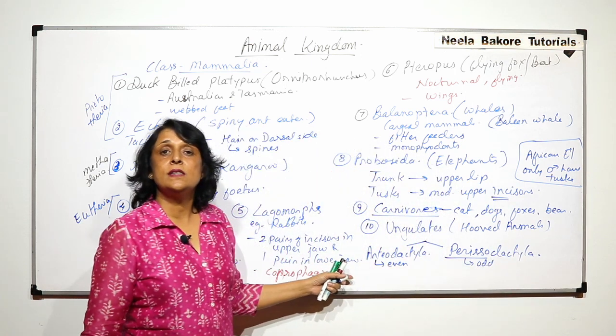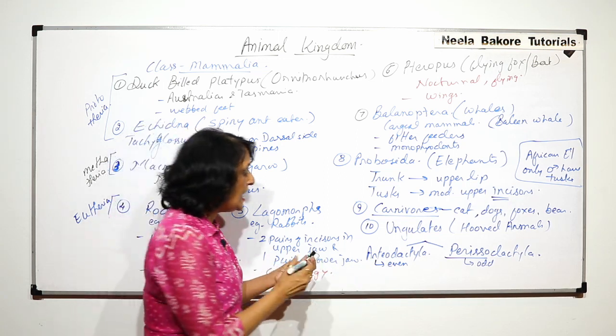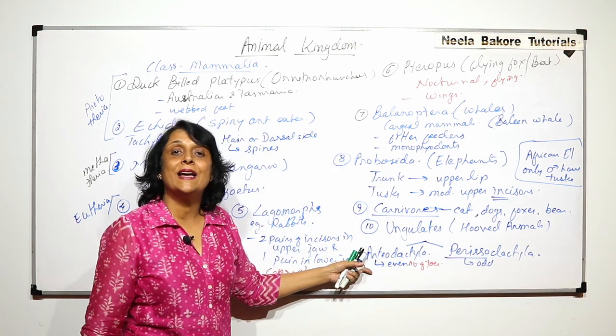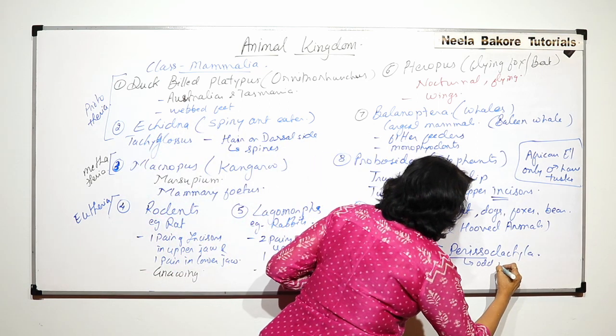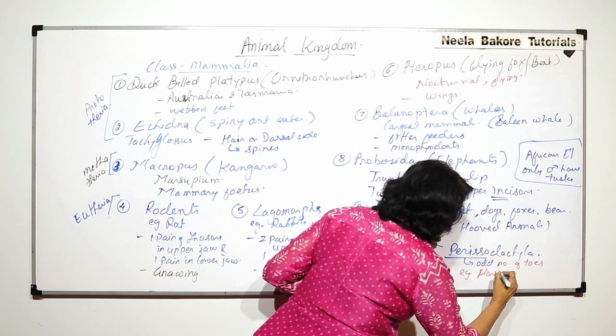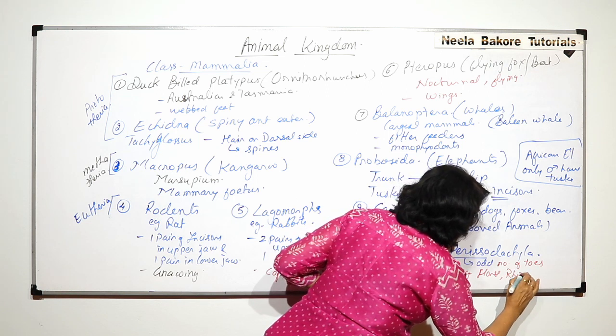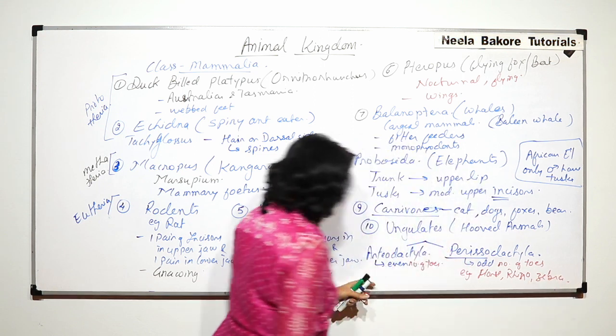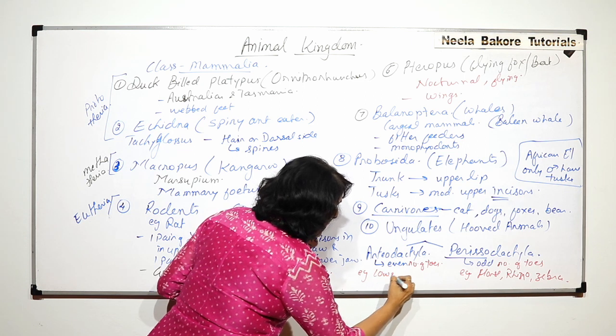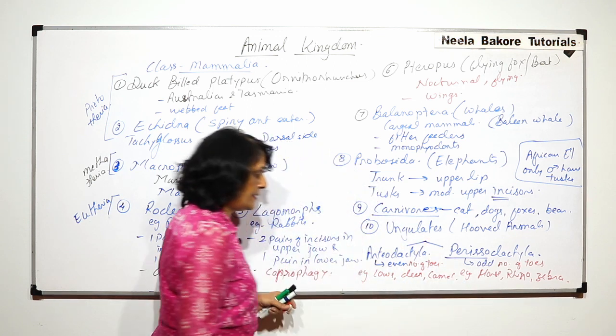So Artiodactyla, they have even number of toes. They are also known as even-toed animals. And these are odd number of toes. In this we take the example of horse, rhino, zebra, whereas in case of Artiodactyla we take the examples of cows, deers, camel, etc.